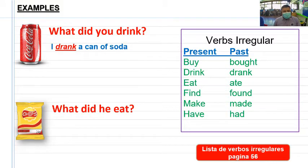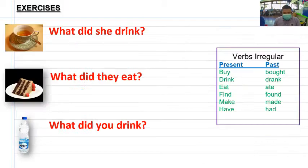Otro ejemplo: what did he eat? Qué comió él? He ate. Ahí tengo el pasado de eat, que es ate. He ate a bag of chips.